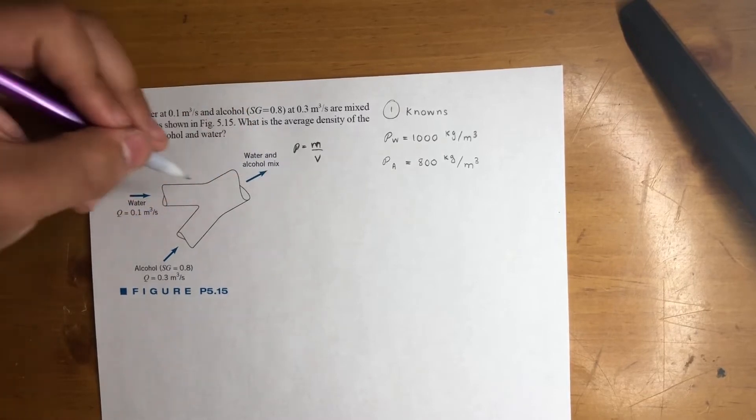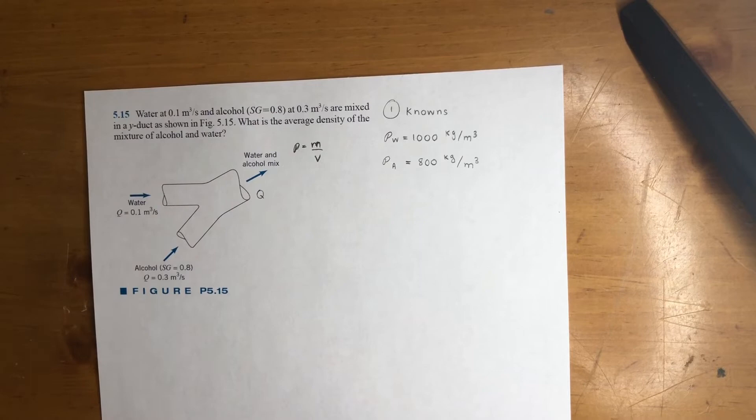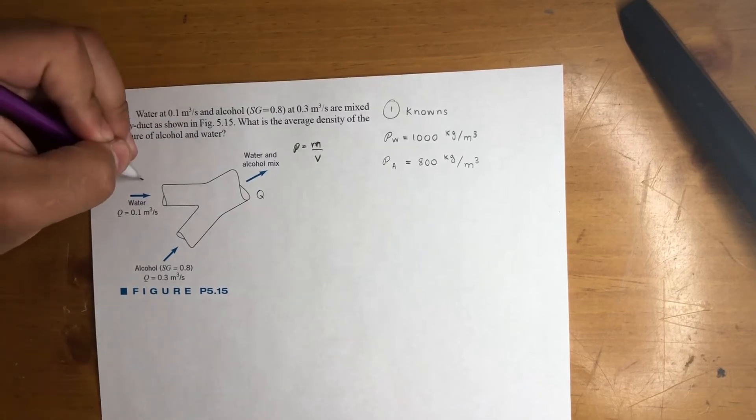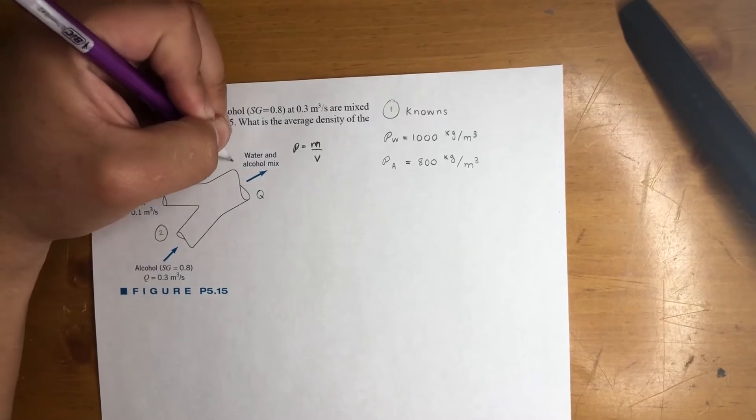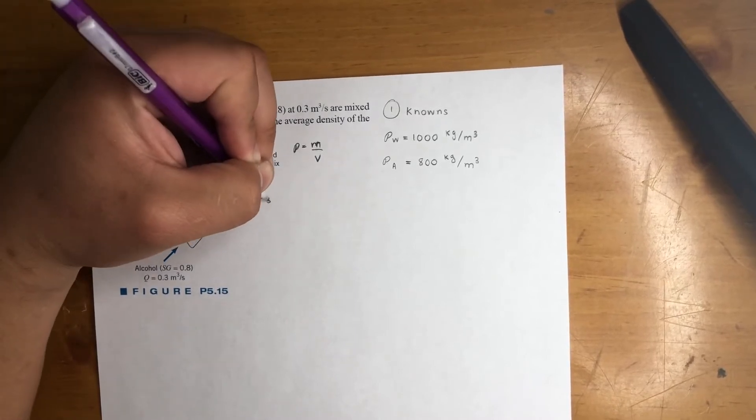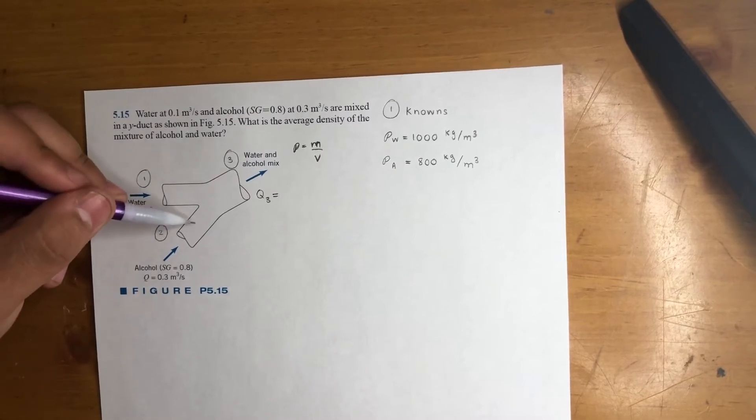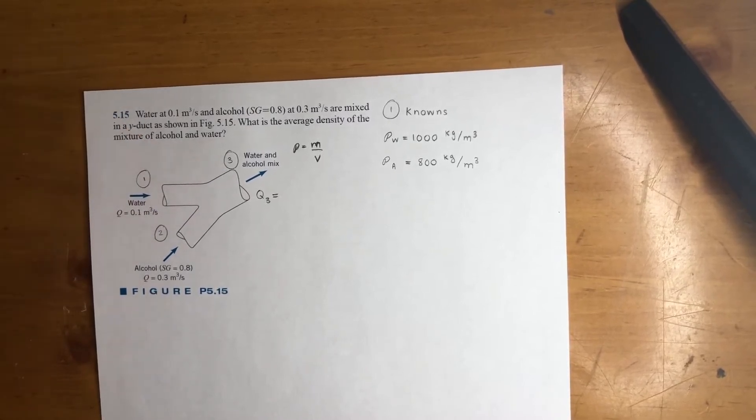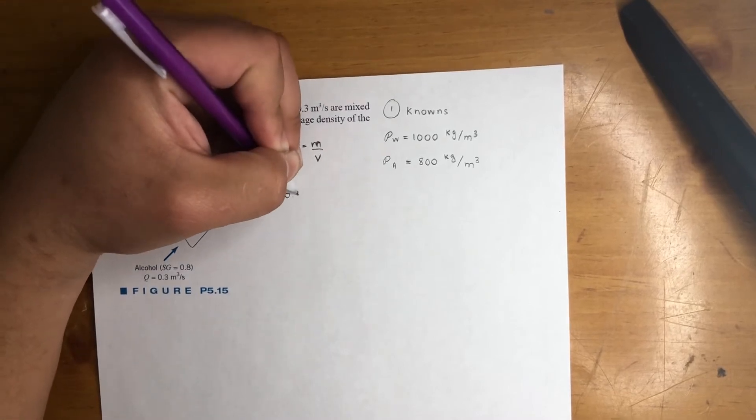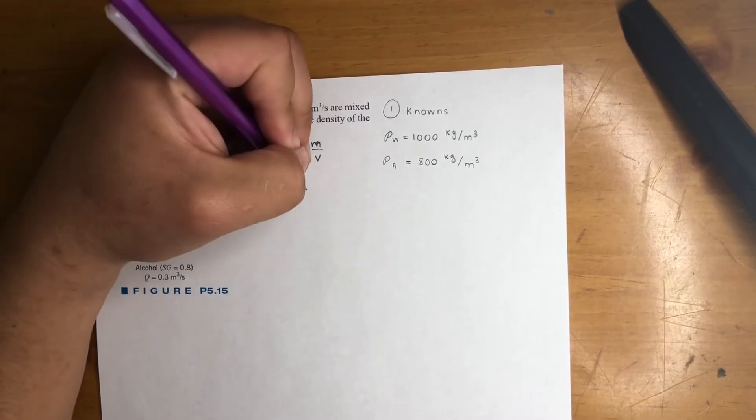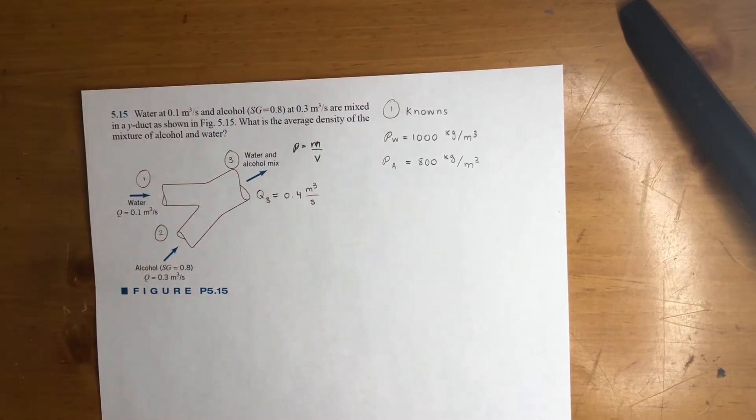So just like that, we could get, let's go ahead and label these points. We'll label this 0.1, 0.2, 0.3. So q3 is equal to just the addition of these two. What goes in must come out at an equal rate. So 0.1 plus 0.3, that is 0.4 meters cubed per second.